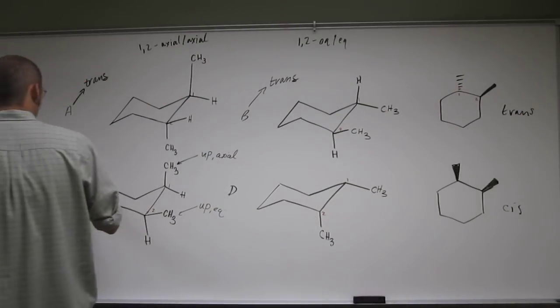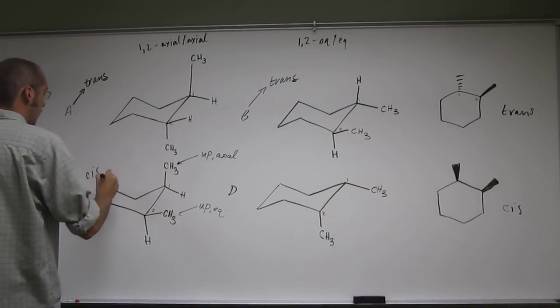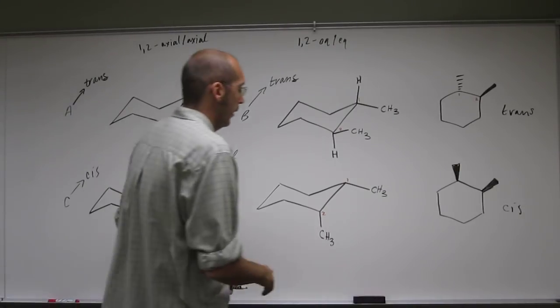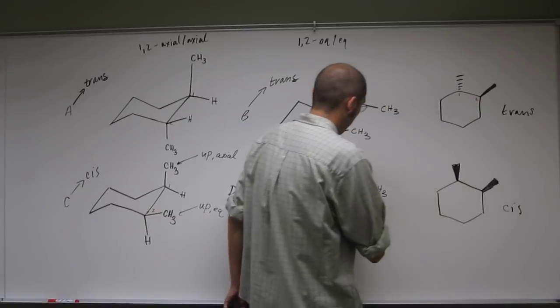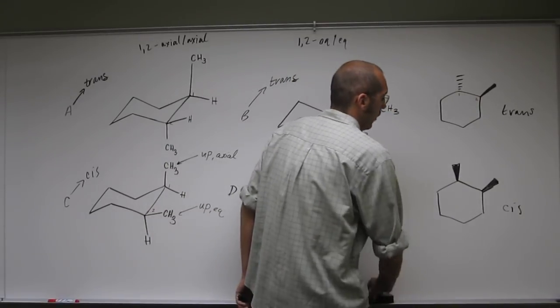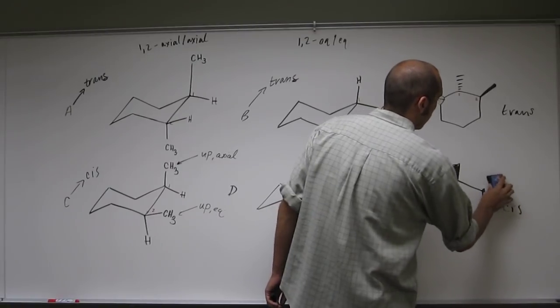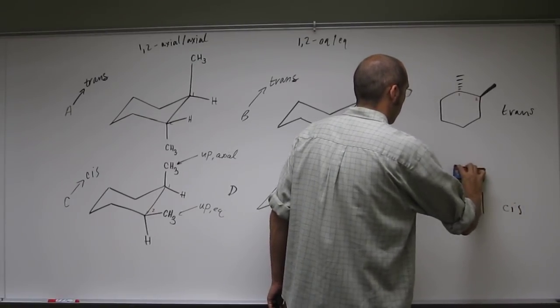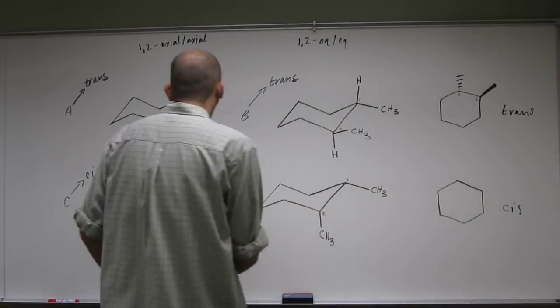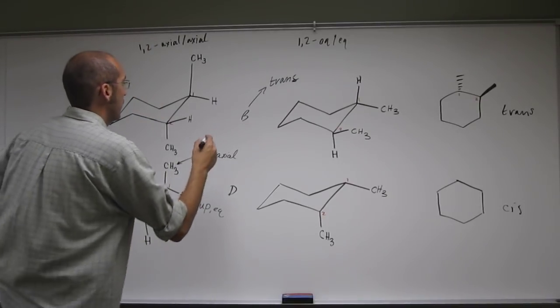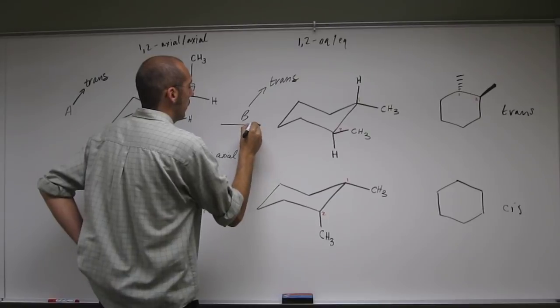So C is cis. And, in fact, this one's cis, but this one just flipped over like that. Or, this one ring flipped. And if you want to think about it that way, that's what's happening here between the two isomers.